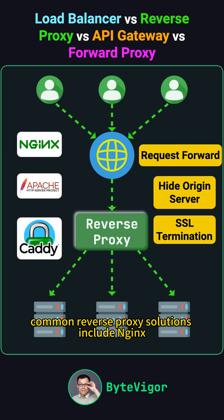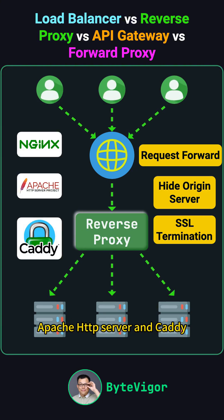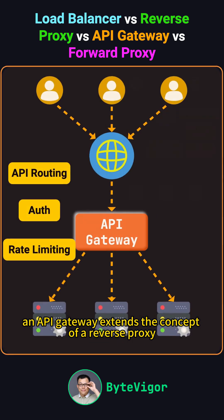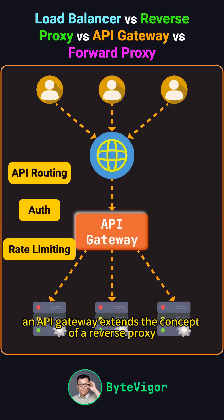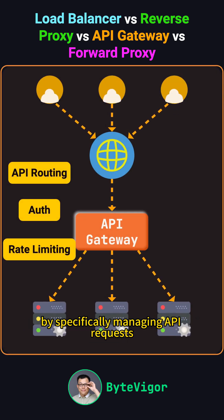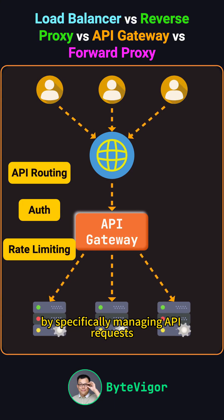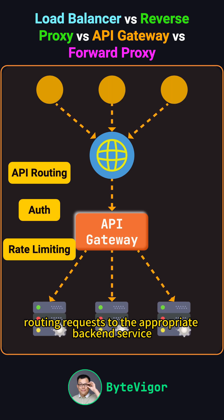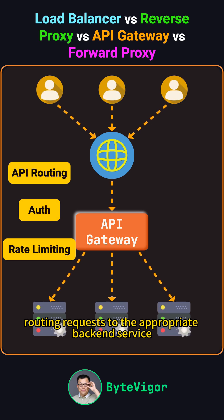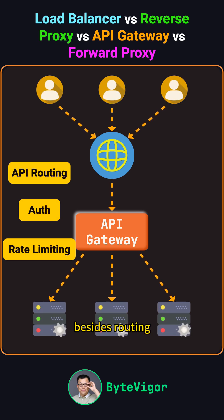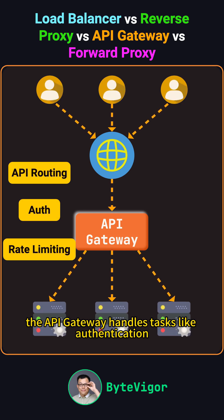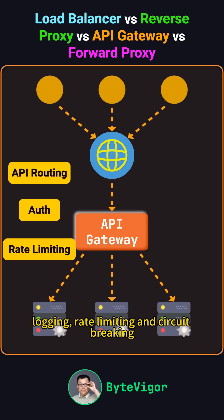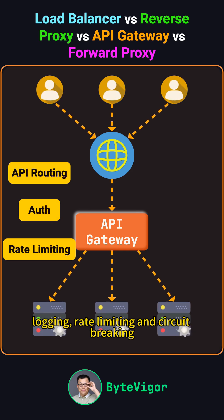Common reverse proxy solutions include NGINX, Apache HTTP Server, and Caddy. An API gateway extends the concept of a reverse proxy by specifically managing API requests. It serves as the main entry point for all API traffic, routing requests to the appropriate back-end service. Besides routing, the API gateway handles tasks like authentication, logging, rate limiting, and circuit breaking.